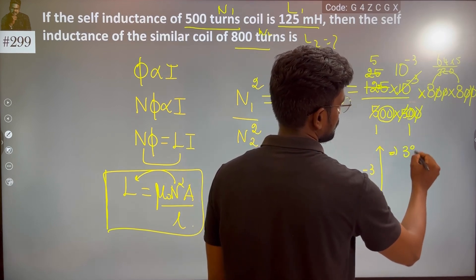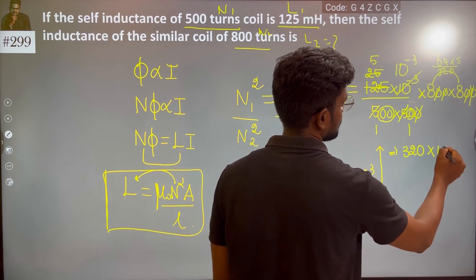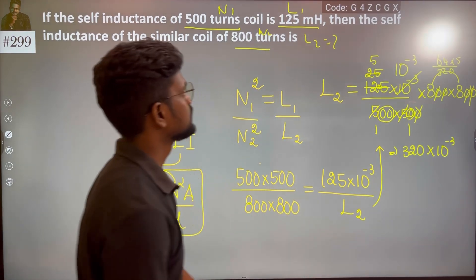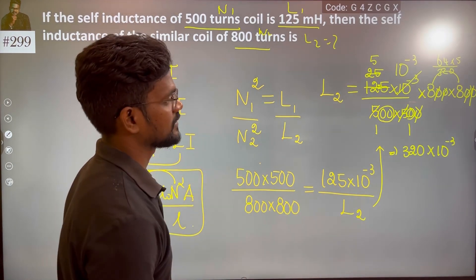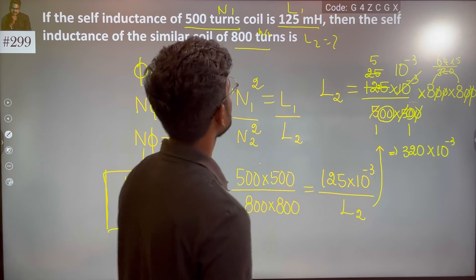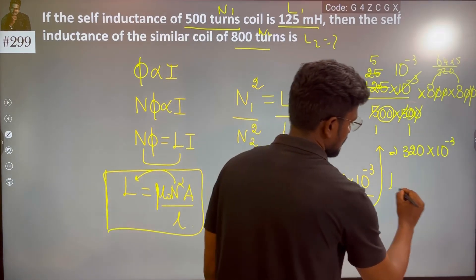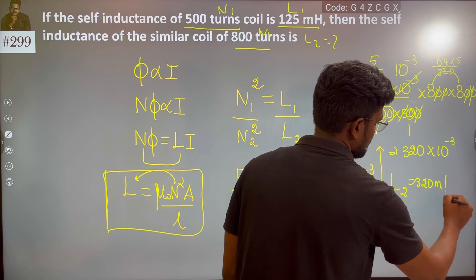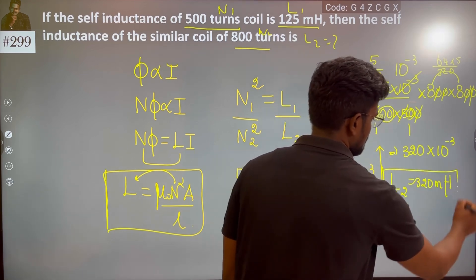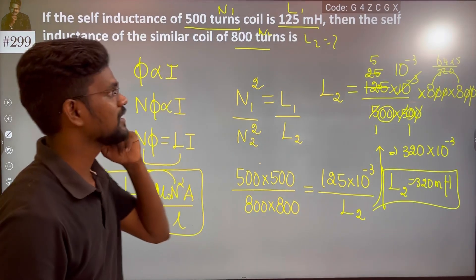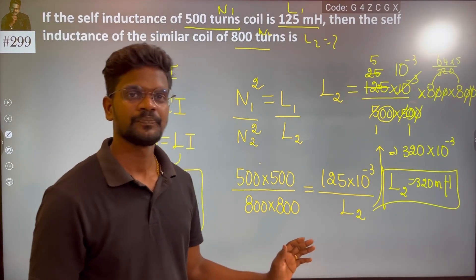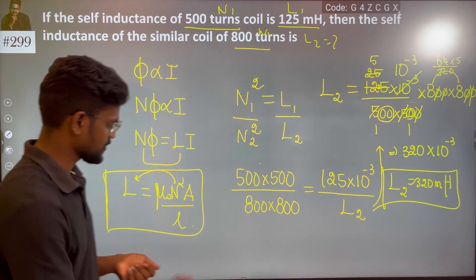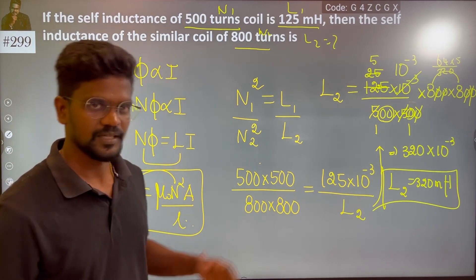64 times 5 is 320, into 10 to the power minus 3. That one will be L which is your self-inductance, so it is nothing but L2, 320 millihenry, right? 320 millihenry.